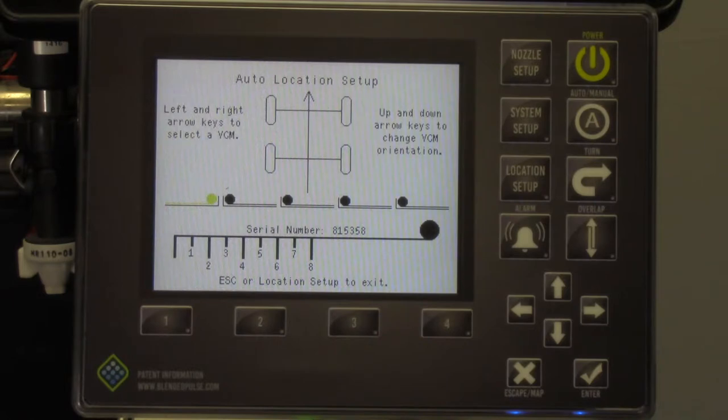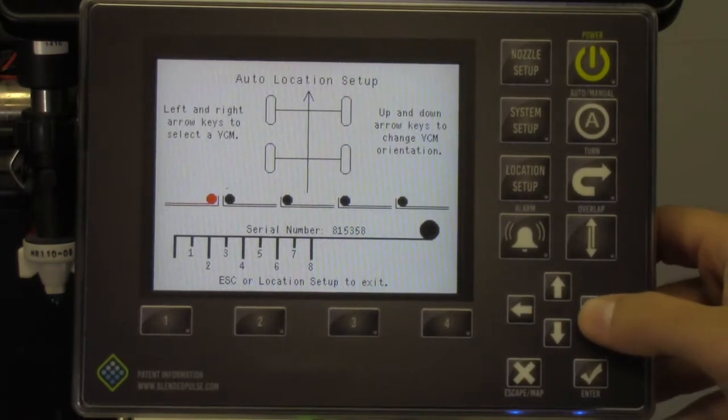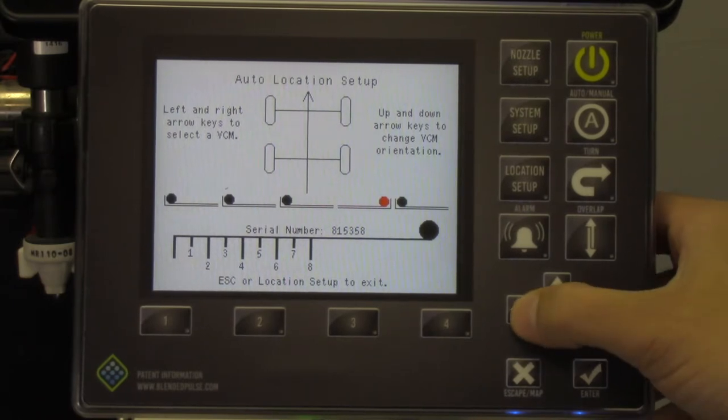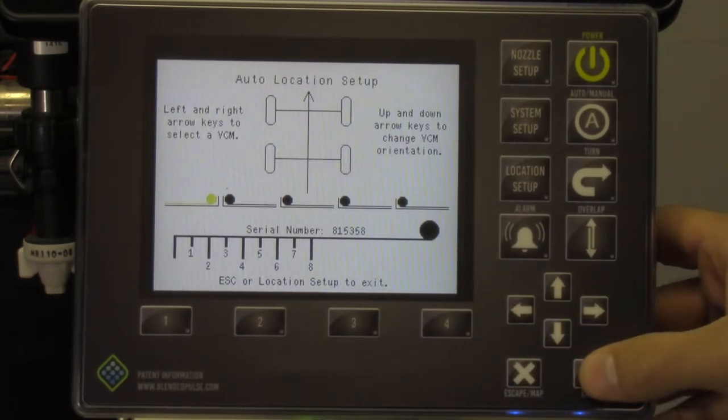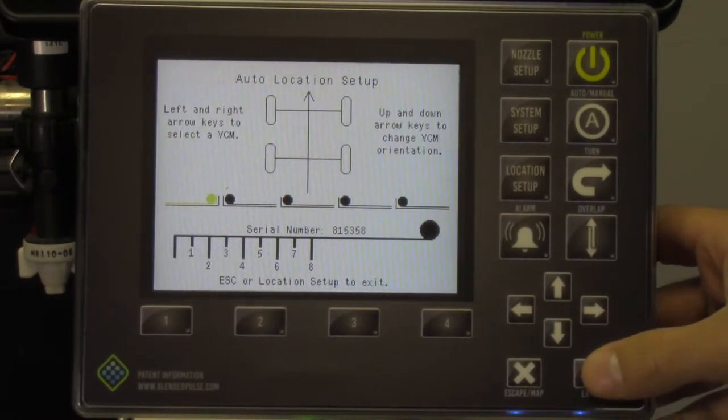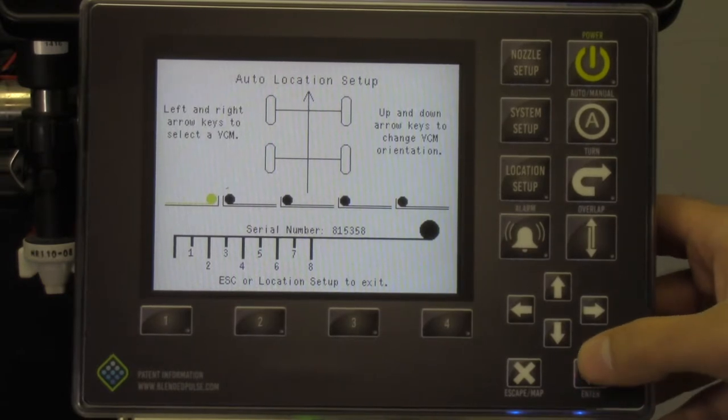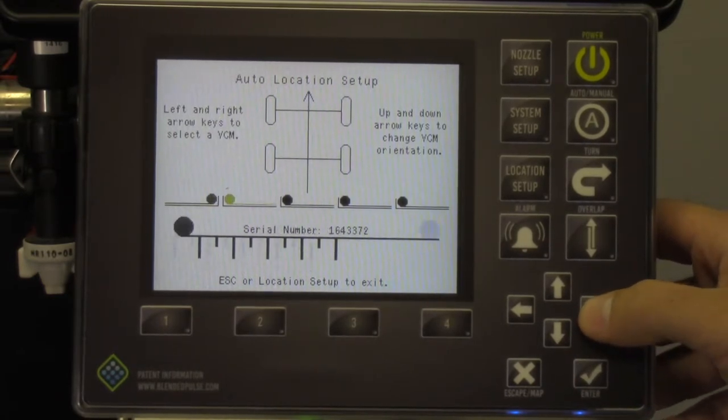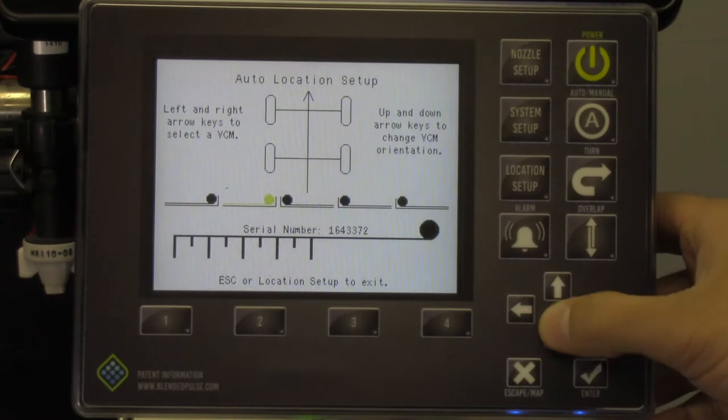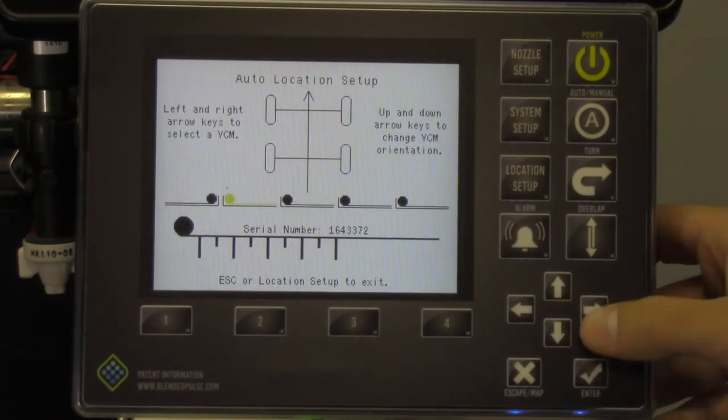You want to arrange the serial numbers in order first. If you need to change the location, press the select key. You can now move the selected VCM. Next you will want to orient the VCMs. You can do this by simply pressing the up or down keys. Now you are ready to move to the next screen.